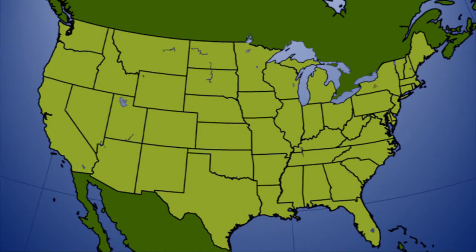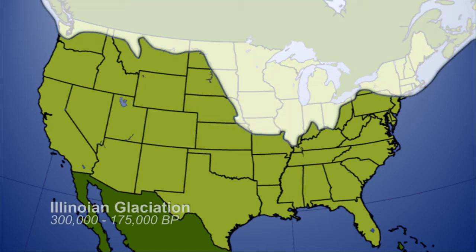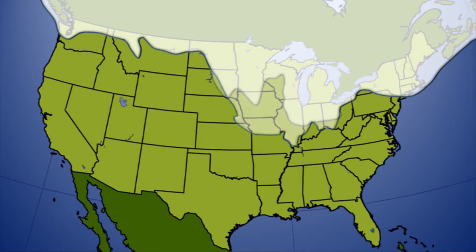Two glacial periods modified the Illinoisan landscape within the last 300,000 years. The first was the Illinoisan glaciation that occurred between 300,000 to 175,000 years before present.